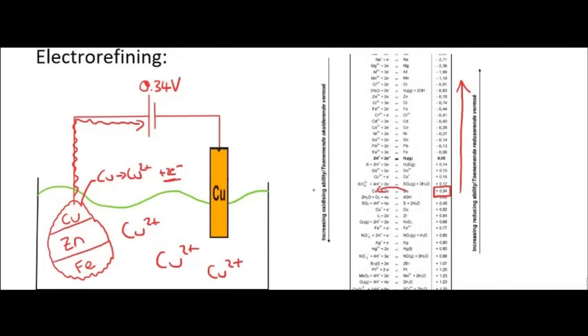So we have a little bit of a problem. Because check this out. Zinc is over here, so its voltage is negative 0.76. What that means is that 0.34 is much bigger, and so 0.34 volts is going to be enough to cause zinc to oxidize.